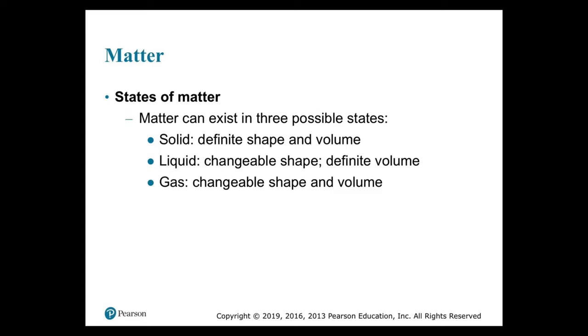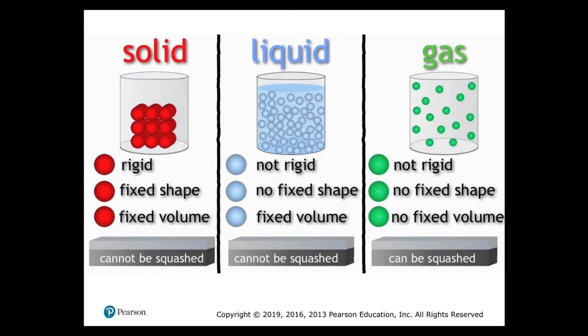Examples of each state are found in the human body. Solids like bones and teeth have a definite shape and volume. Liquids such as blood plasma have a definite volume but conform to the shape of their container. Gas has neither a definite shape nor a definite volume — the air we breathe is a gas. A solid is rigid with a fixed shape and volume; a liquid is not rigid, has no fixed shape, but has a fixed volume; and a gas is not rigid, with no fixed shape and no fixed volume.